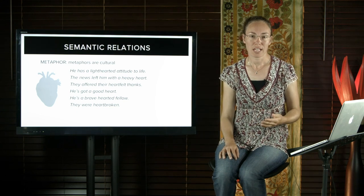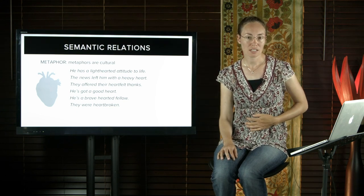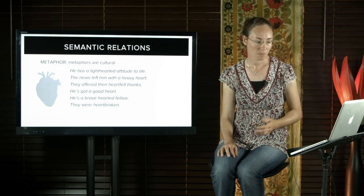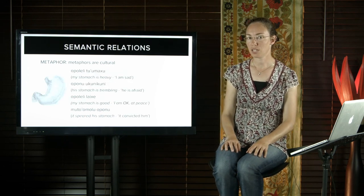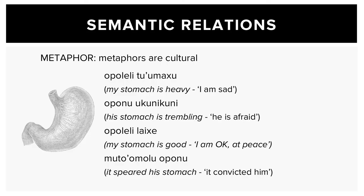In many other languages, emotion is located in the stomach or sometimes in the liver. For example, in Atta, a language from Papua New Guinea, you would say, 'My stomach is heavy' to mean I'm sad. 'His stomach is trembling' would mean he's afraid. 'My stomach is good' would mean I'm okay, at peace. Or 'It speared his stomach' means it convicted him.